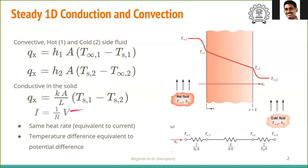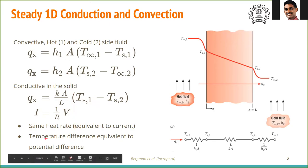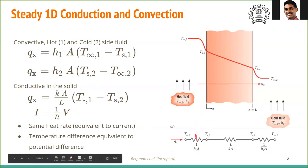From Ohm's law, V = IR, or I = V/R. Here, heat flux is analogous to current (flux of electrons vs. flux of heat), and temperature difference drives heat just as potential difference drives electrons. By analogy, the reciprocal of the factor multiplying the potential difference is called the resistance. So the reciprocal of each multiplying factor can be defined as thermal resistance.